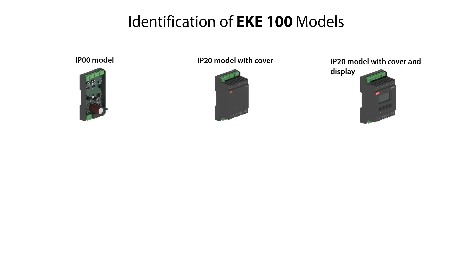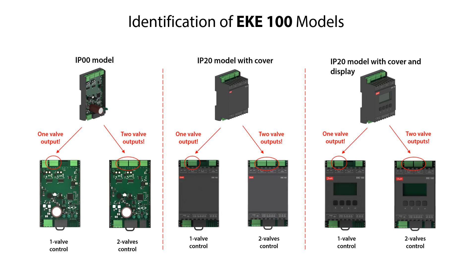Here you see the EKE100 IP00 model and the EKE100 IP20 models with cover and without and with built-in display. For all three models you can identify if they are 1 valve or 2 valve control models by checking the number of valve outputs on the top of the board. The 1 valve control model has 1 valve output and the 2 valves control model has 2 valve outputs.